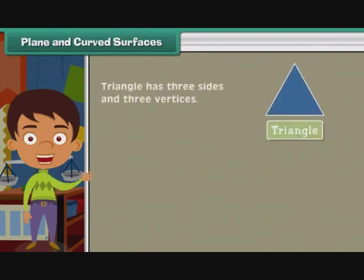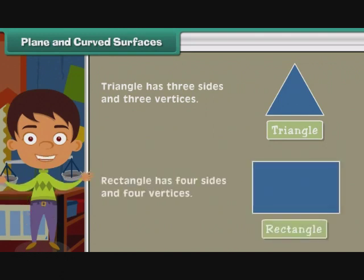Similarly, triangle has three sides and three vertices. Rectangle has four sides and four vertices.